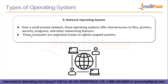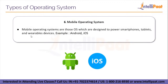The fifth type is the network operating system. Over a small private network, these operating systems offer shared access to files, printers, security, programs, and other networking features. These computers are popularly known as tightly coupled systems — the opposite of loosely coupled distributed systems. Some popular network operating systems include Novell NetWare, Windows NT and 2000, Linux, Sun Solaris, UNIX, and IBM OS/2.